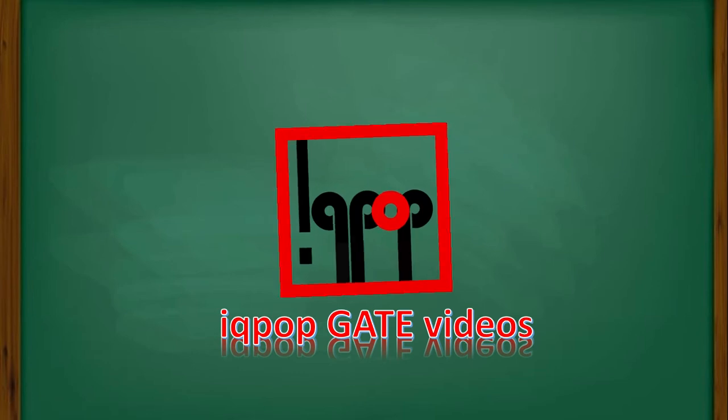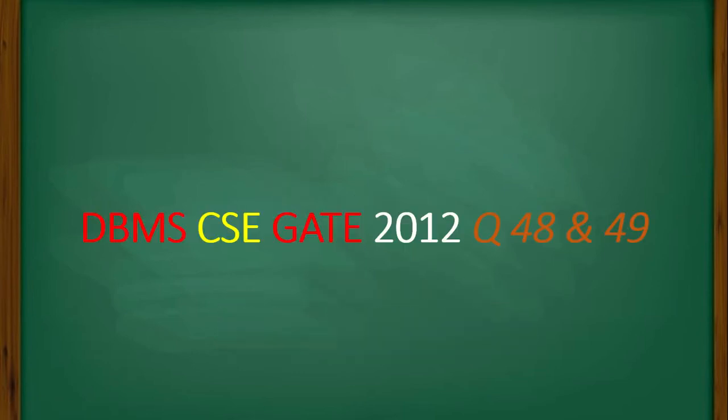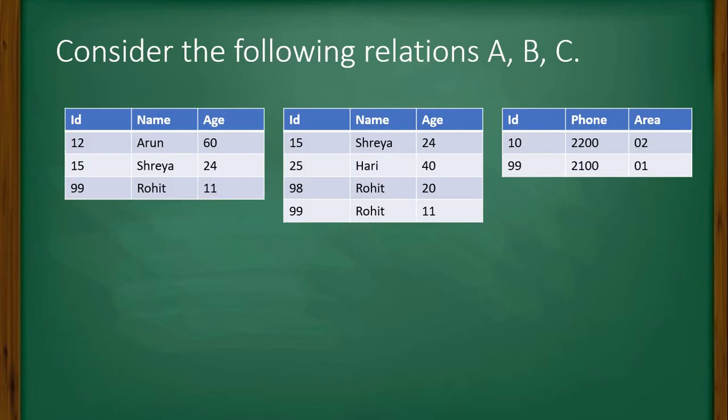Hello and welcome to IQPOP. Here is a question from DBMS, question number 48 and 49. Consider the following relations. There are three tables. How many tuples does the result of the following SQL query contain? Now let's see the SQL query. So these are A, B, and C.